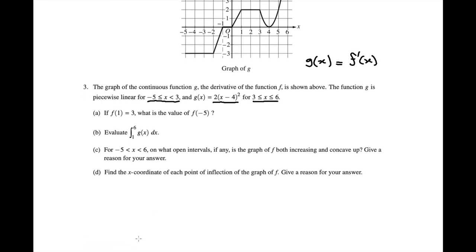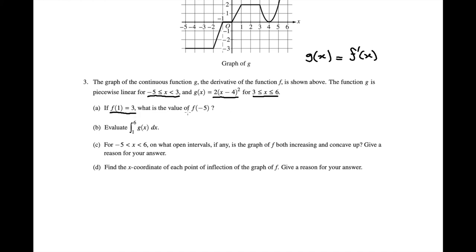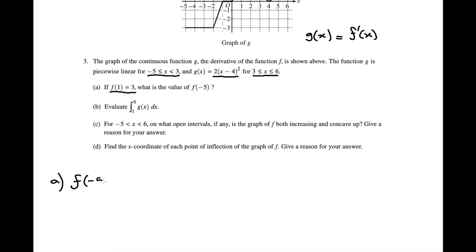So now we're being asked a couple of questions. Firstly, given that f(1) = 3, what is the value of f(-5)? We're being asked about f(x), about which we don't actually know anything — we only know that the derivative is g(x). So how do we apply information about the derivative to tell us about the original function? That's where we use an integral. We're looking for f(-5), and we know f(1) = 3, so we start at f(1) and tag on the integral from 1 to -5 of g(x) dx, which represents the net change from 1 to -5.